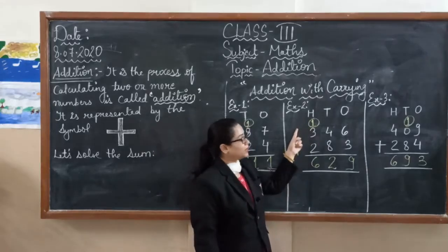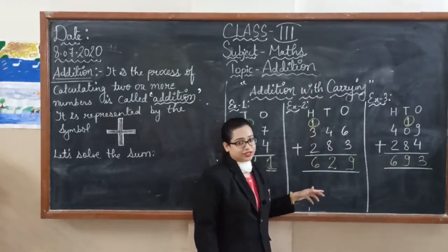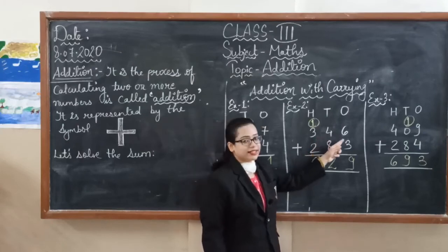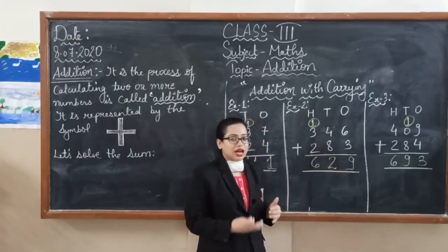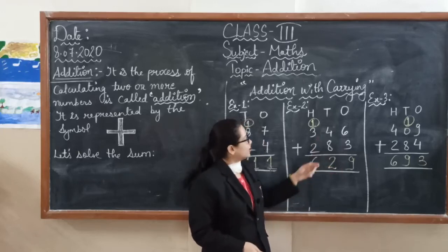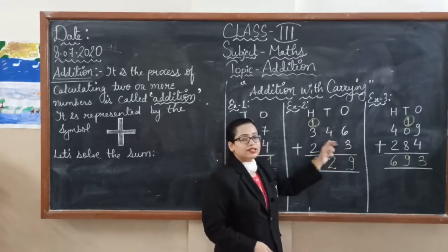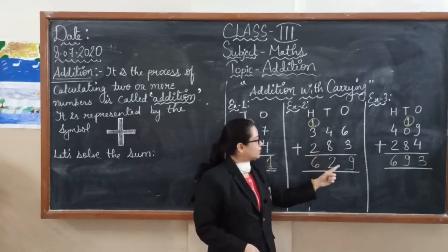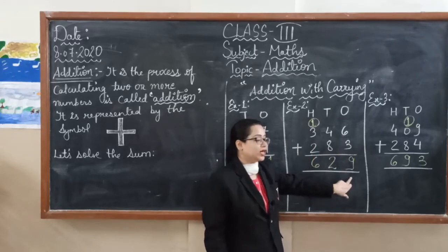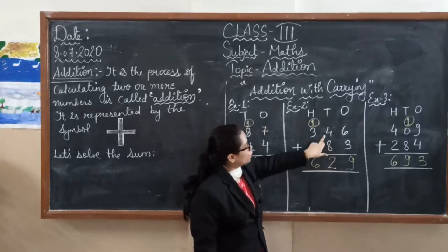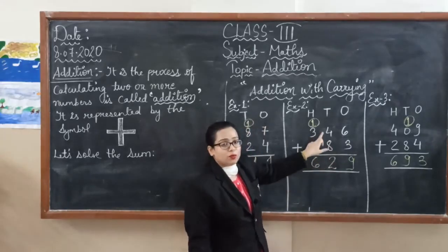Our second example is three digit numbers: three hundred forty-six and two hundred eighty-three. Always you will start addition from the one's place. Six plus three: seven, eight, nine. Here we are getting nine. This is a single digit, so you are not getting a problem. Next number is four plus eight. Four plus eight is twelve.